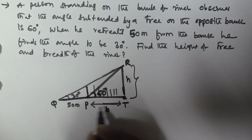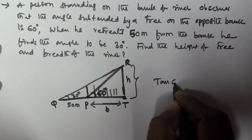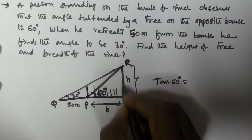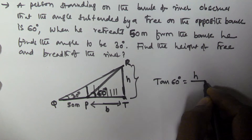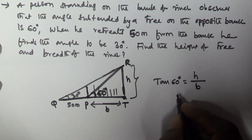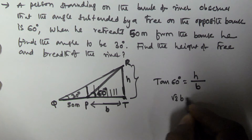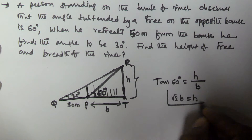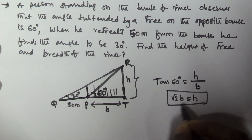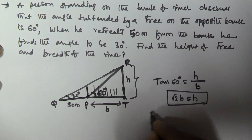From position P, tan 60 equals the opposite side over the adjacent side, which is h divided by b. Since tan 60 equals √3, we get √3 × b = h. So the height h equals √3 times b, where b is the breadth of the river.